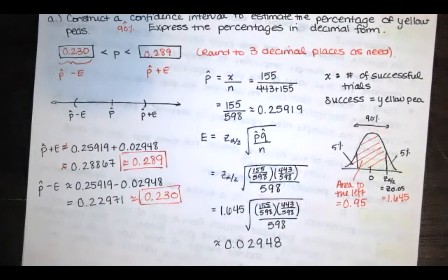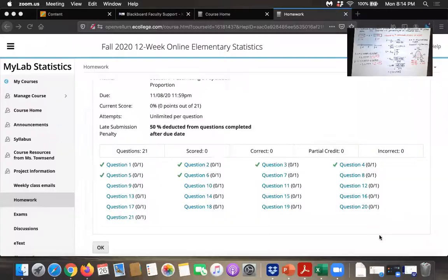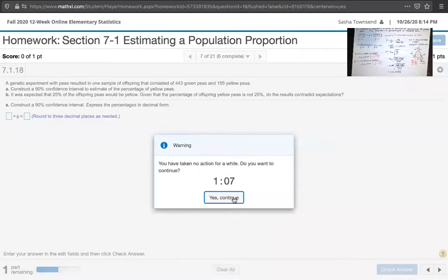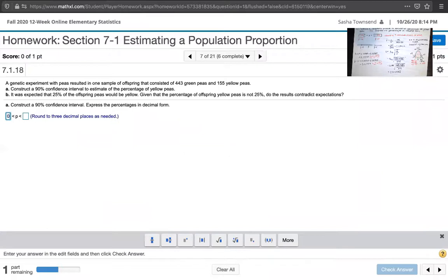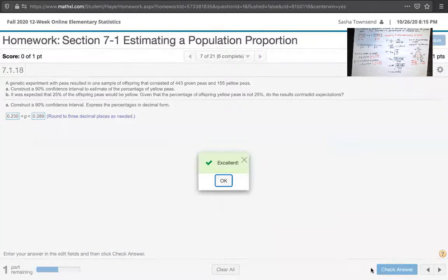Let's go back to my lab statistics and see if it likes this answer. Yes, 0.230 is there and then the upper bound was 0.289.